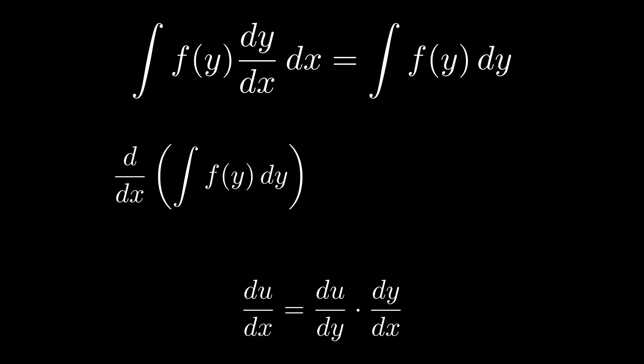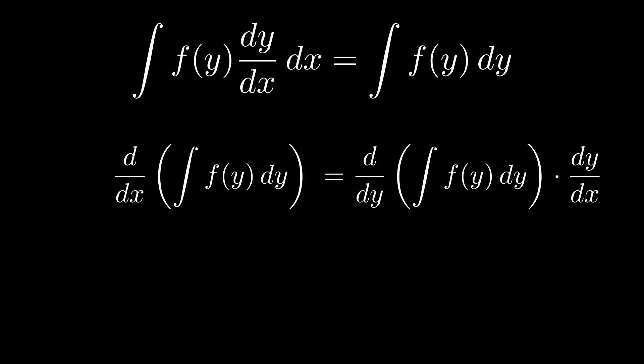And here u is this integral of f of y dy. So basically, I'm taking the derivative of u dx, which according to the chain rule is the same as differentiating u with respect to y times the derivative of y with respect to x. So all we've really stated is the chain rule, but with our u being this integral of f of y dy.